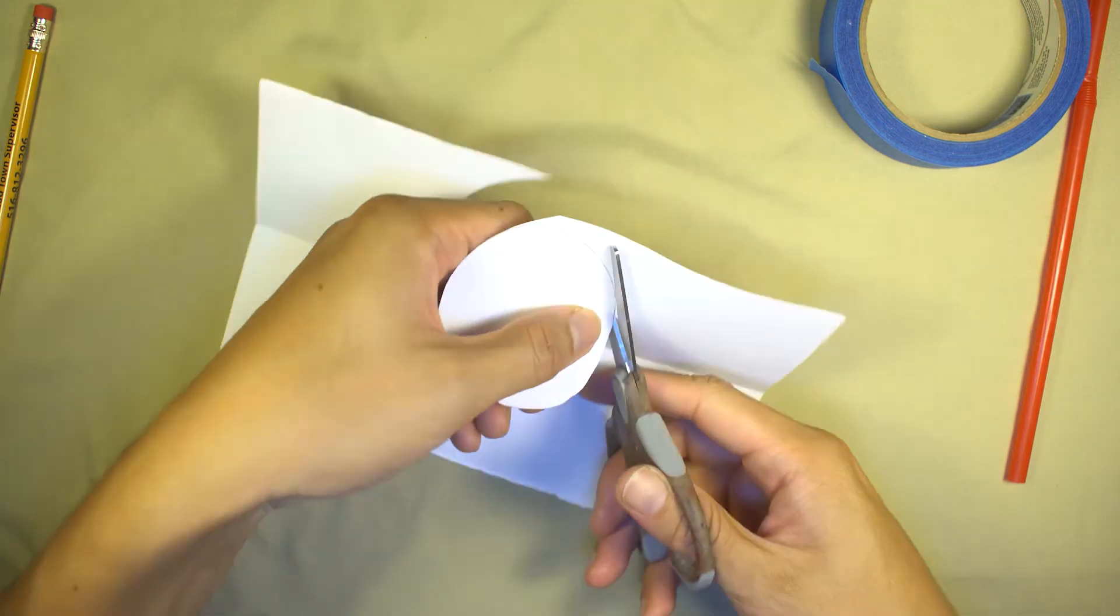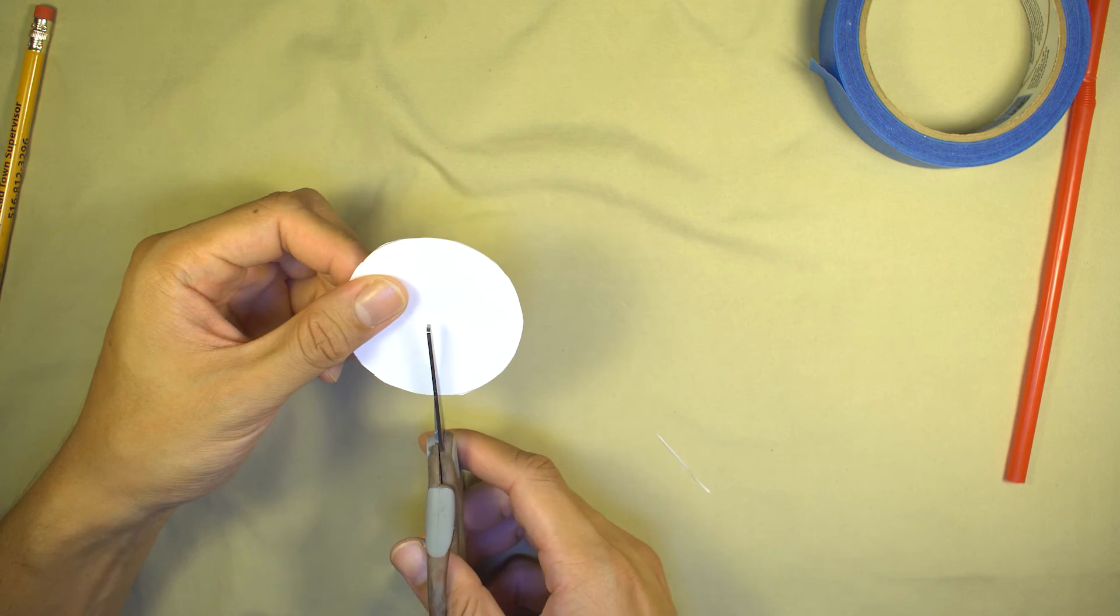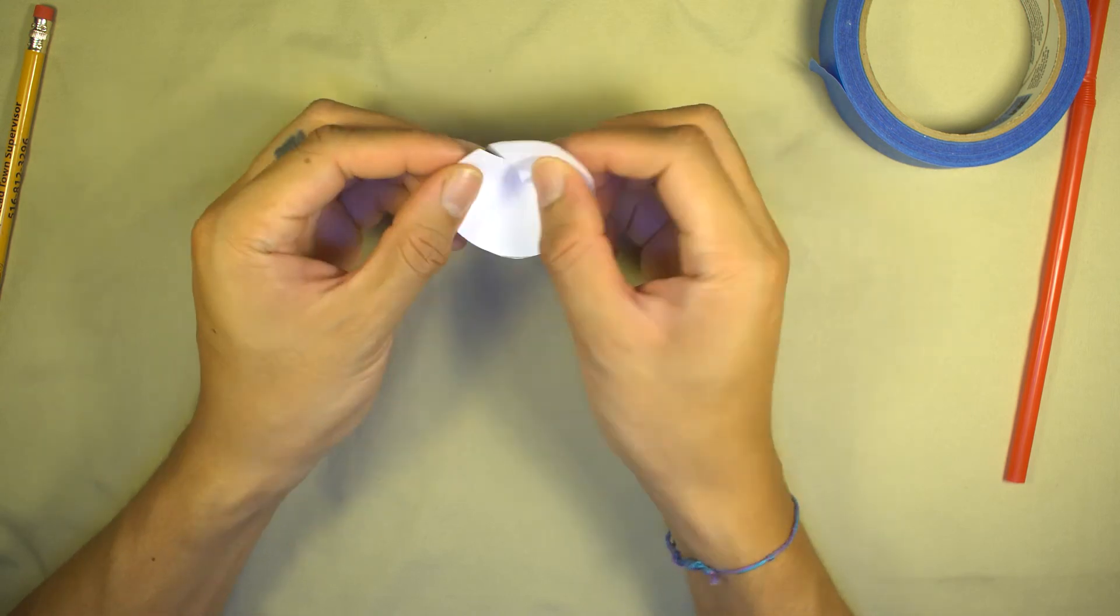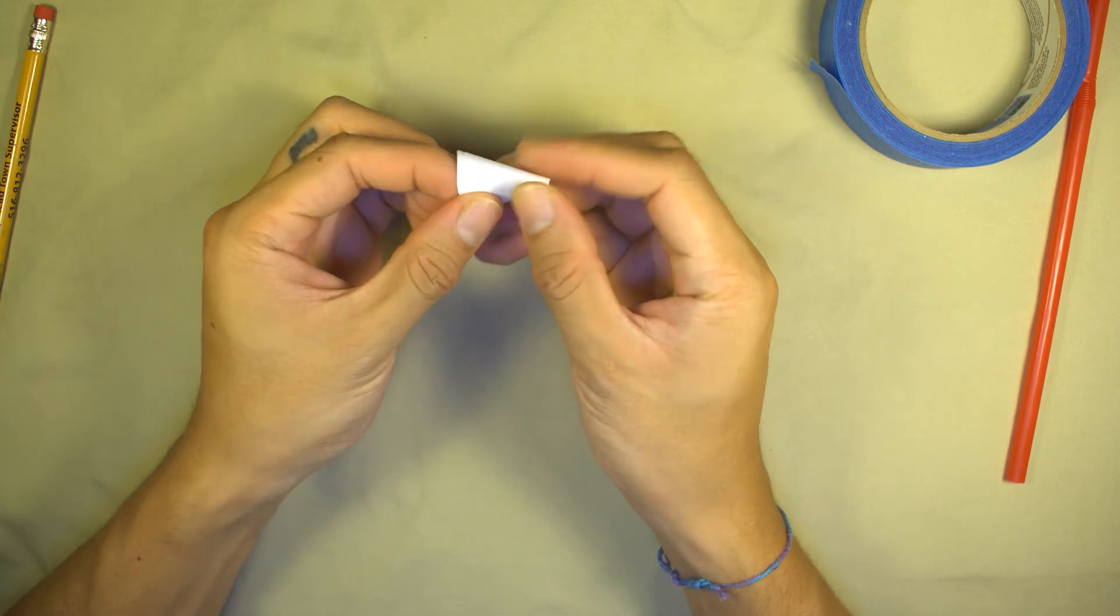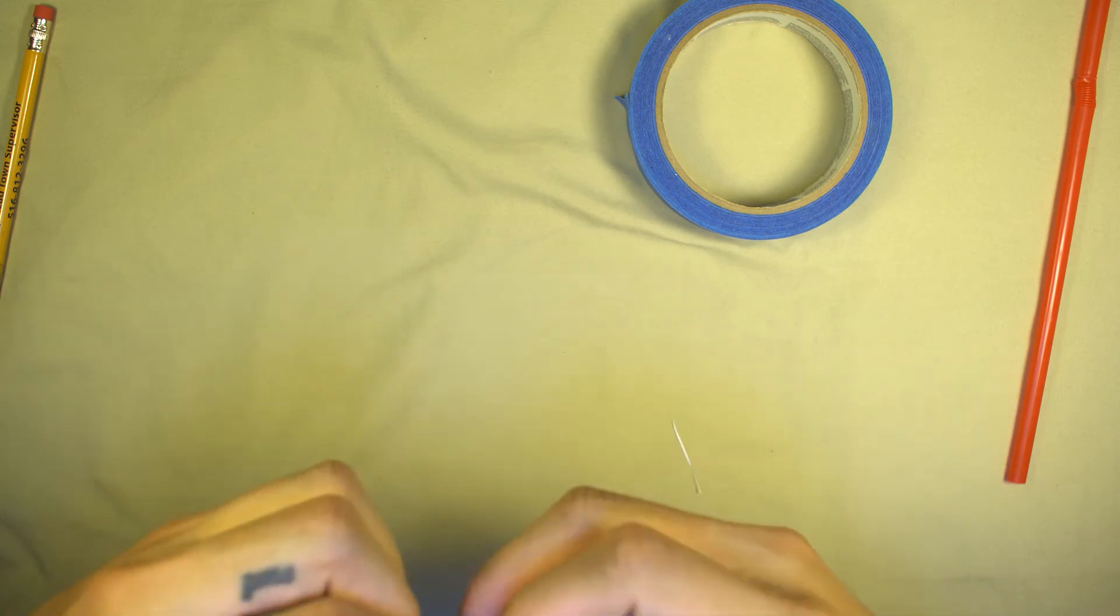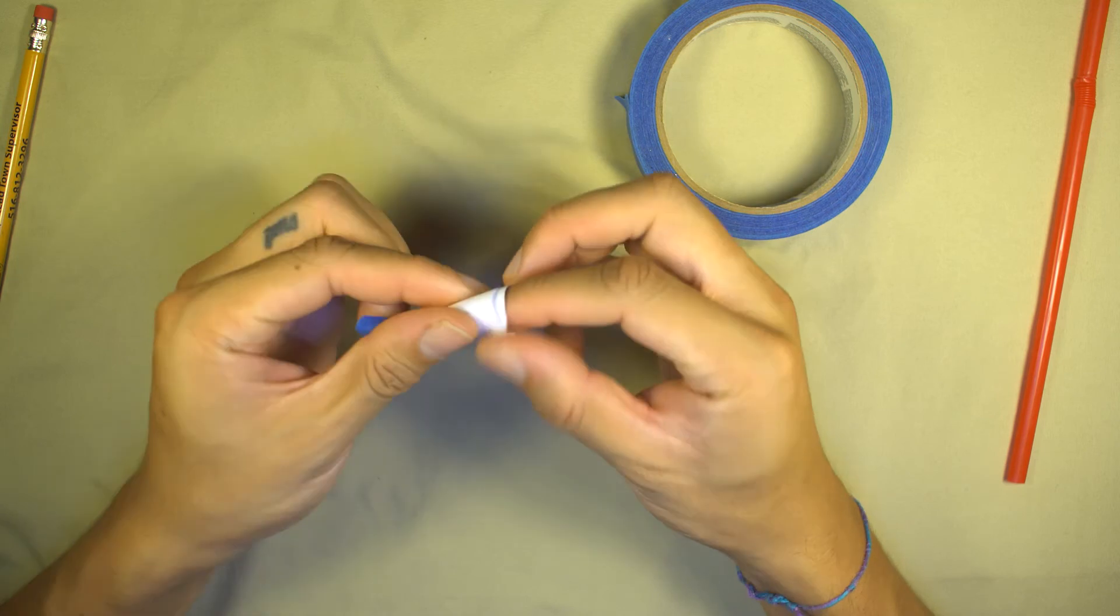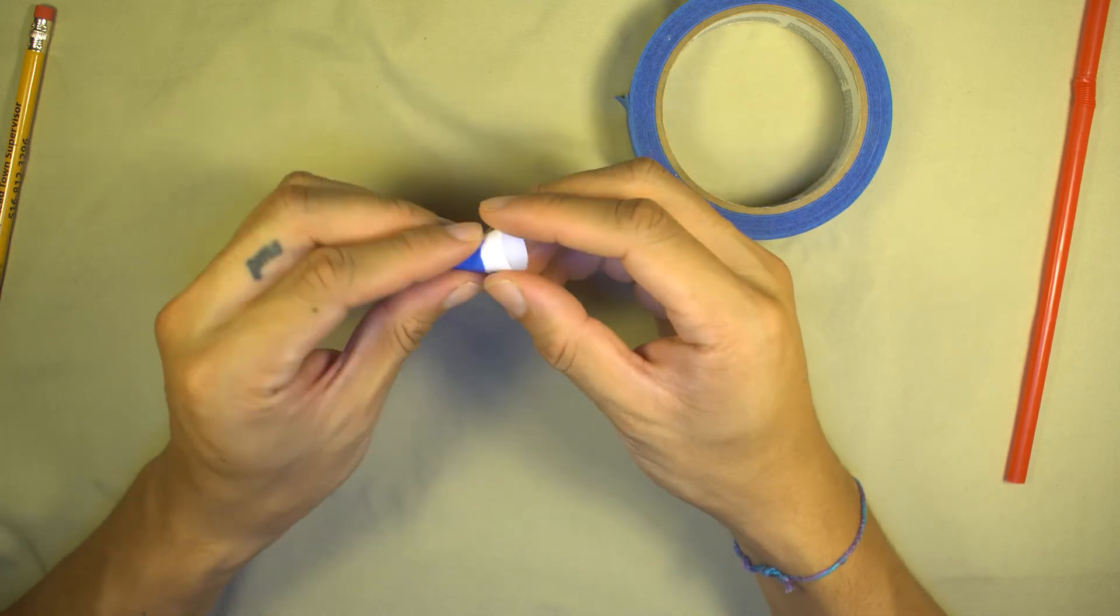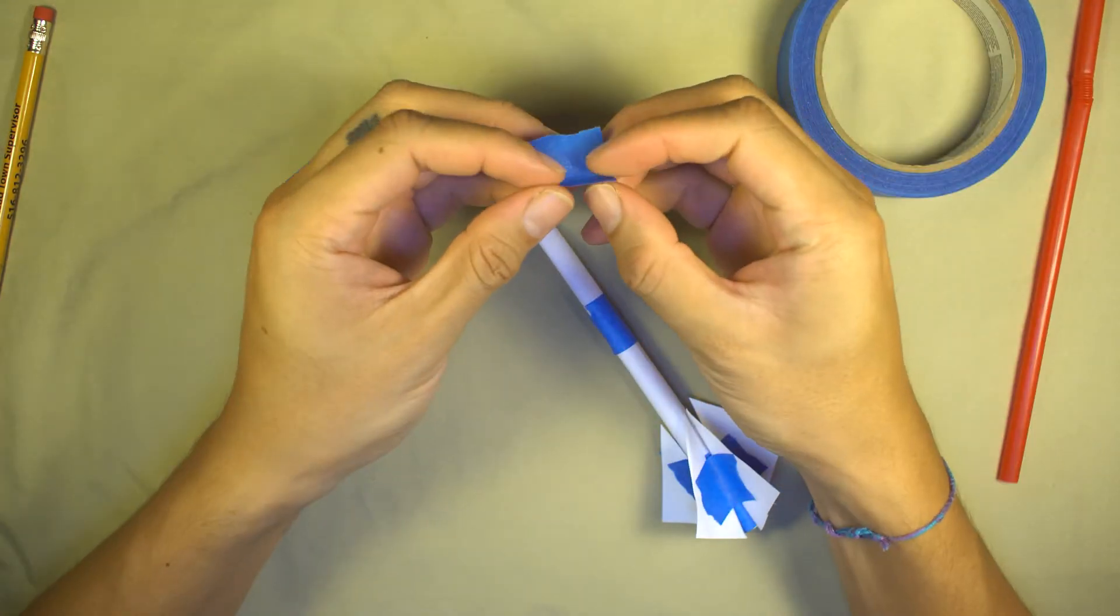Make a nose cone. Then tape it onto the closed end of the rocket.